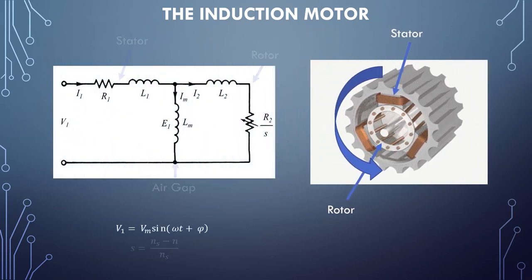This is the circuit representation of the induction motor. Note that the input voltage, and by extension the induced currents, is a time-variant sinusoid that operates at a specific magnitude, frequency, and phase. Speed control of the rotor is typically accomplished by manipulating either the magnitude or, more commonly, the frequency of the input.